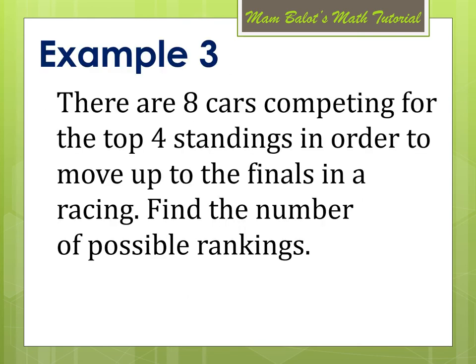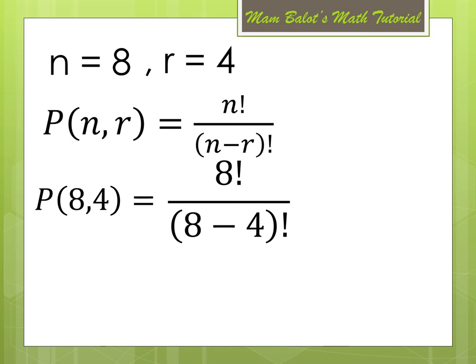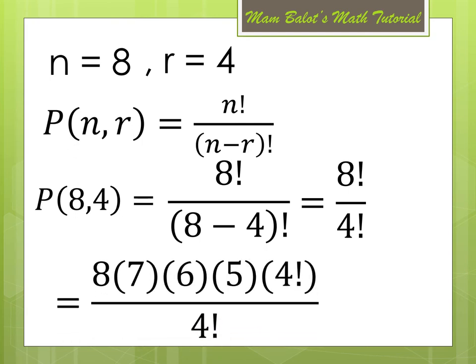Another example: there are 8 cars competing for the top 4 standings in a racing. Find the number of possible rankings. So N is equal to 8 and R is equal to 4. Using the permutation formula, P(8,4) = 8 factorial divided by (8 minus 4) factorial = 8 factorial divided by 4 factorial. Expanding the numerator: 8 times 7 times 6 times 5 times 4 factorial, cancel out 4 factorial in the denominator. Multiplying what's left: we have 1,680.